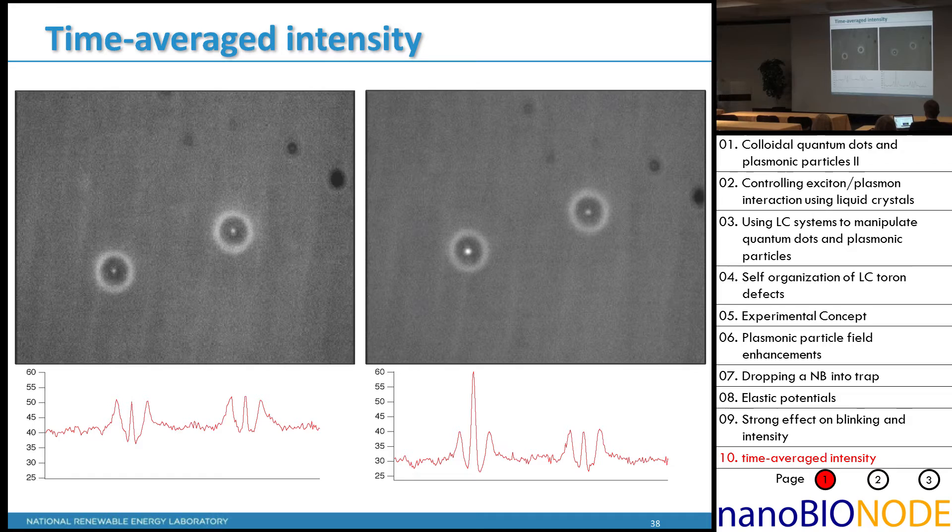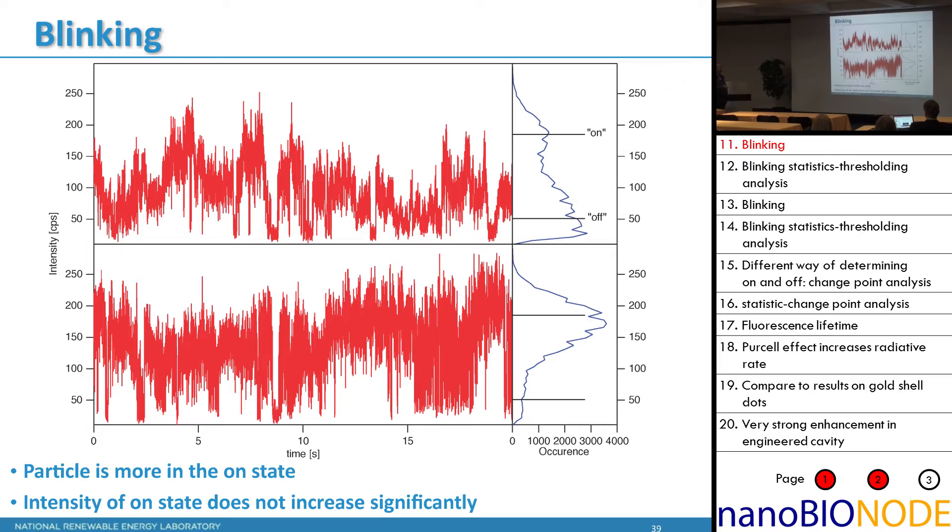Now if you actually look at the blinking of the particle, this is the time trace in seconds of these particles in that defect. You can see the particle is mostly in its off state and then in its on state. This is before we dropped the nanoburst particle in. After we put the nanoburst particle in, the particle is mostly in the on state now suddenly. That on state is not significantly brighter than it was before. It's just that it's more in the on state.